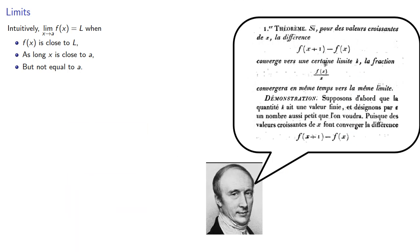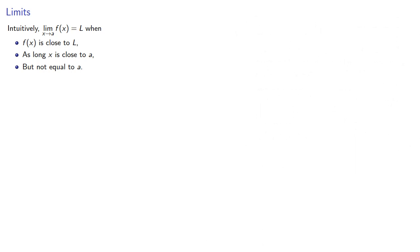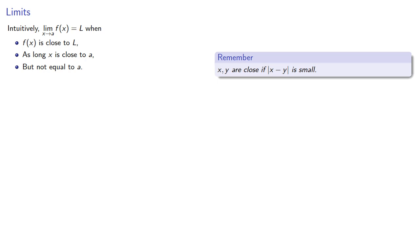The key step in this mathematization process is to put a definition on what we mean by close to. We might remember that x and y are close if the absolute value of their difference is small. And so we get our formal definition of limit.